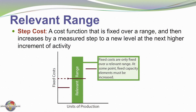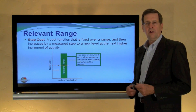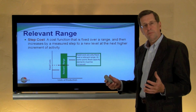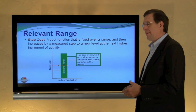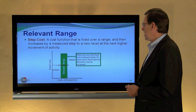A step cost is a type of fixed cost that increases in increments. Fixed costs are only fixed over a relevant range; at some point, fixed capacity would need to be increased. As units of production rise, we incur one level of fixed cost, then at a higher level of production we incur another fixed cost, and yet another beyond that. For example, if we're manufacturing something on an assembly line that can only produce 1,000 units a day, and we need to increase production to 2,000 units, we'll need to add another assembly line — adding that additional fixed cost — and so it goes for successively higher levels of production.